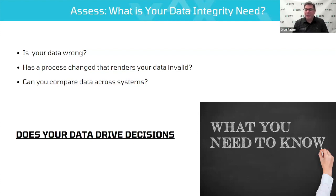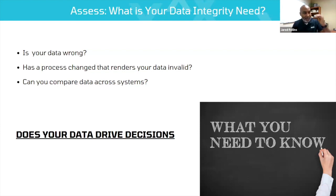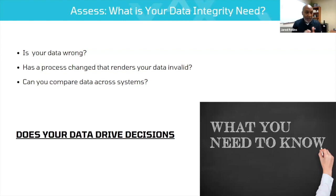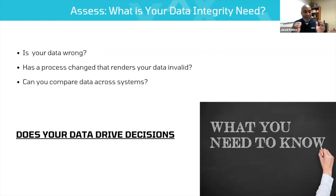Process changes that may impact your company and data handling could be any number of things. A decision made at the top gets filtered down and means you'll start collecting different data or changing how data is collected. Technology changes — you get new software that's bigger and better, and the way data is input may be different, causing data inconsistencies. Maybe a workflow changes, and who's inputting data might change. As those workflows or software change, they can introduce issues — for instance, a required field where the worker doesn't have that information, so you may see placeholders like 9999 or XXXX throughout your data.